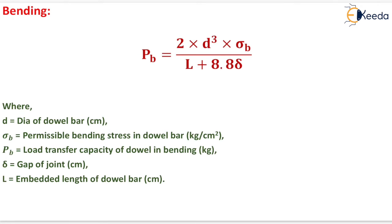In bending, P_b = (2 × d³ × σ_b) / (L + 8.8δ), where d is the diameter of the dowel bar in centimeters, and σ_b is the permissible bending stress in the dowel bar in kg/cm².